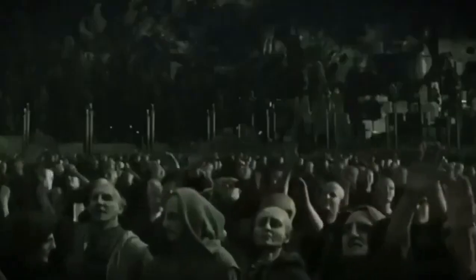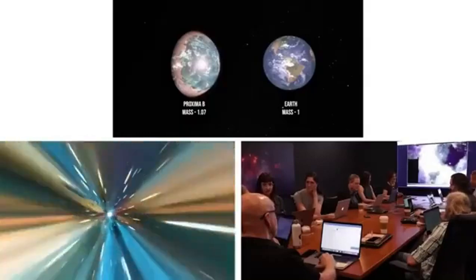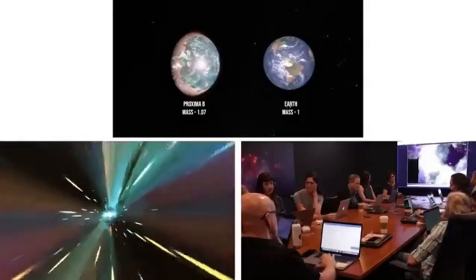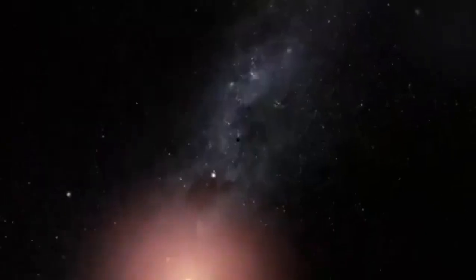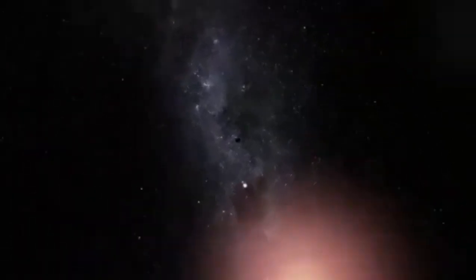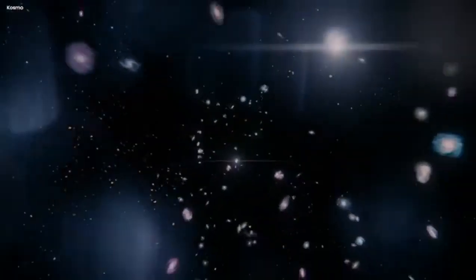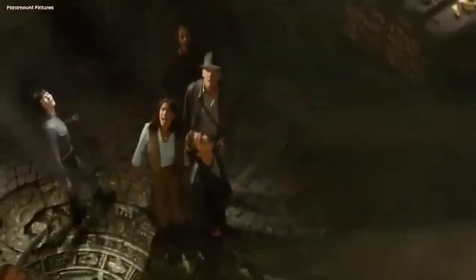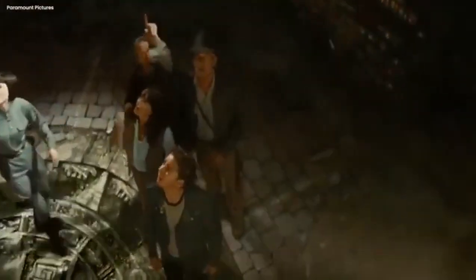For example, Proxima b, the closest exoplanet to Earth, is in the habitable zone of our nearest neighbour, the dwarf star Proxima Centauri, about 4.25 light-years away. Since the exoplanet was 20 times nearer to its star than the Earth is from the Sun, Proxima b was believed to be tidally locked with a permanent day side and night side.